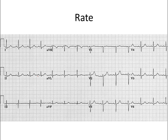To start off, we want to figure out what the rate is, and there are two ways to do this. The first is to count the number of QRS complexes across your ECG and multiply by six. An ECG is ten seconds, so multiplying by six tells you how many beats per minute.